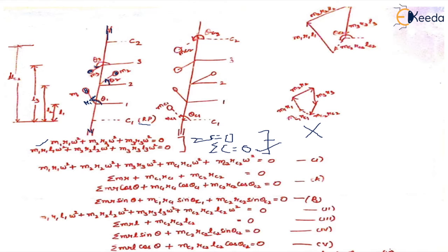The possibility is the addition of counter masses. We add two counter masses in two different planes lying at the two ends of the rotor. The first plane is C1 and the second plane is C2. In this derivation, we have to find out the magnitude of these masses mc1 and mc2, and the angle at which they are to be placed.